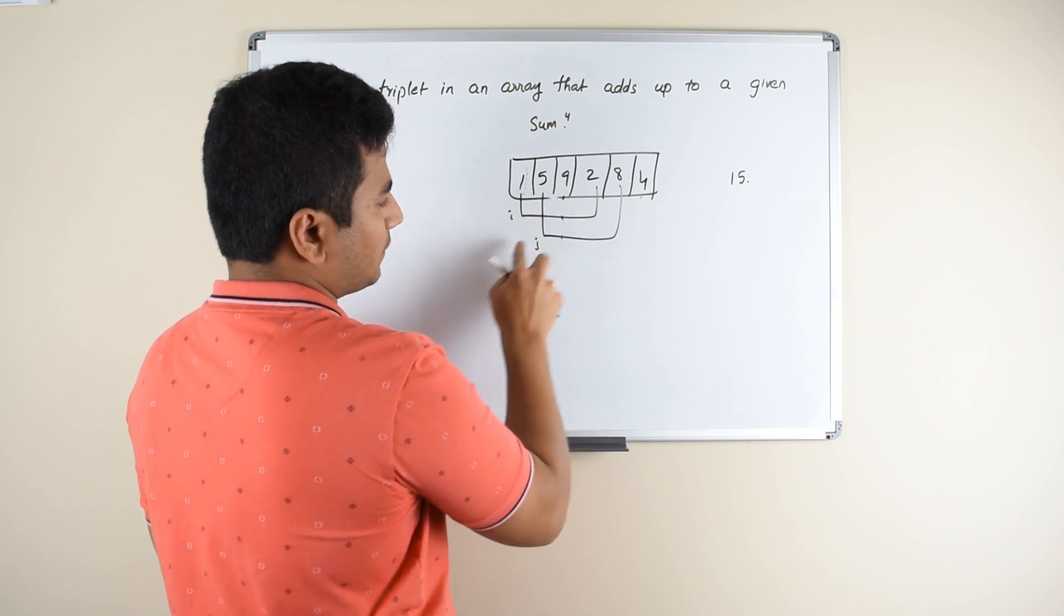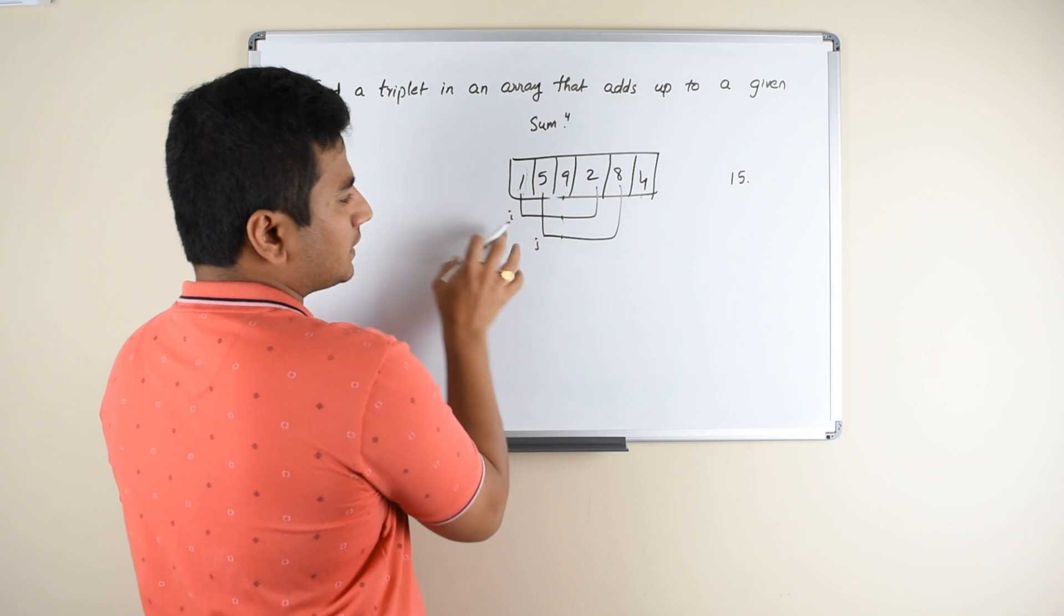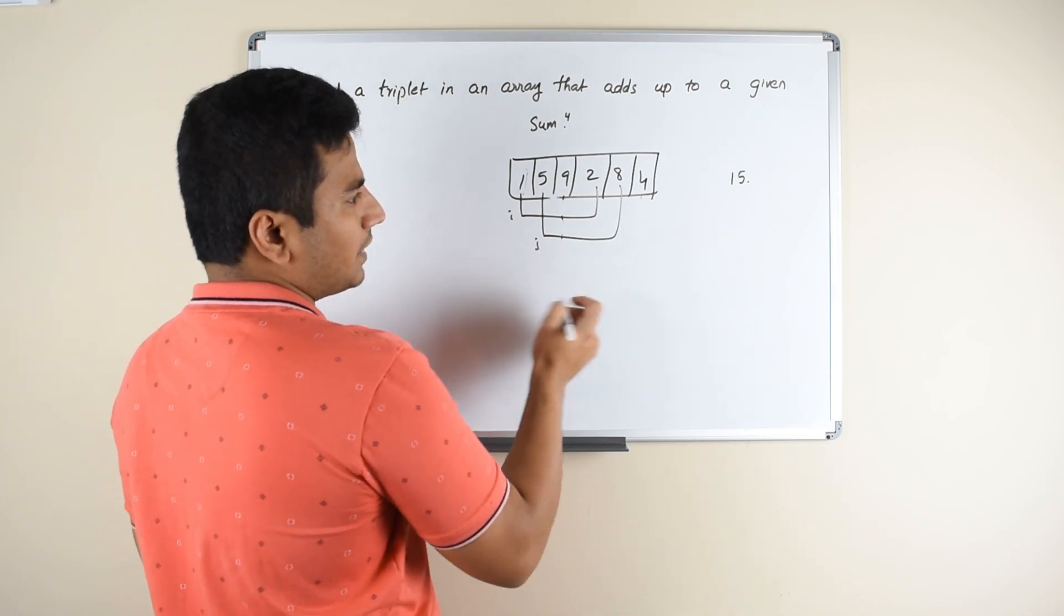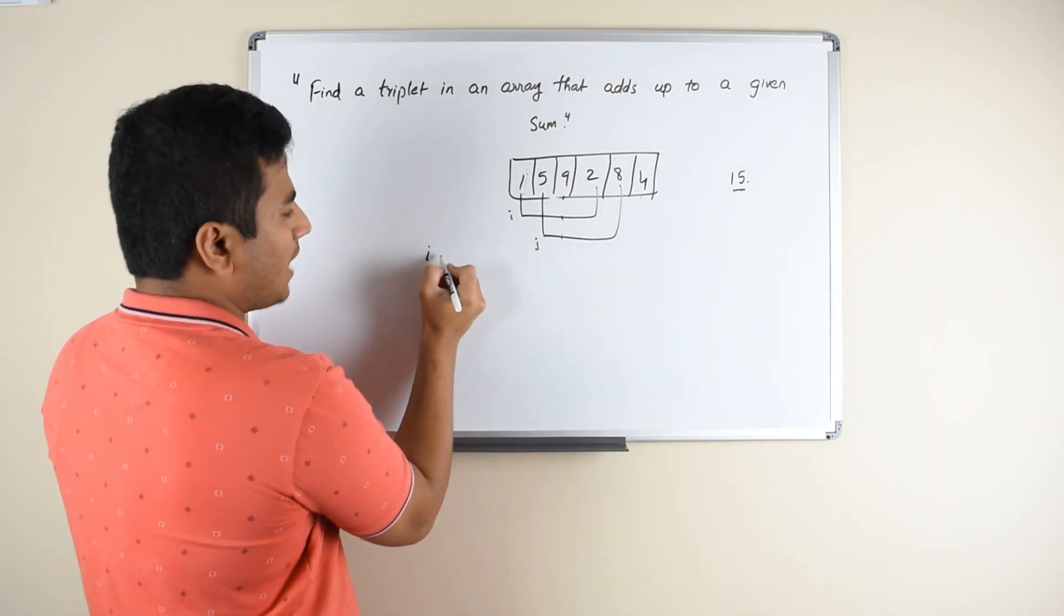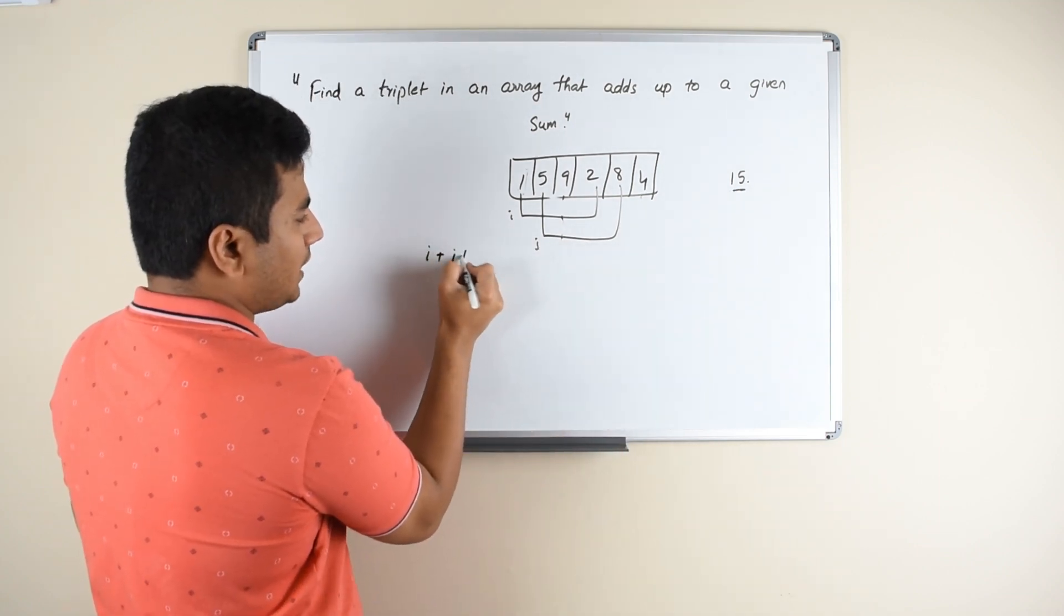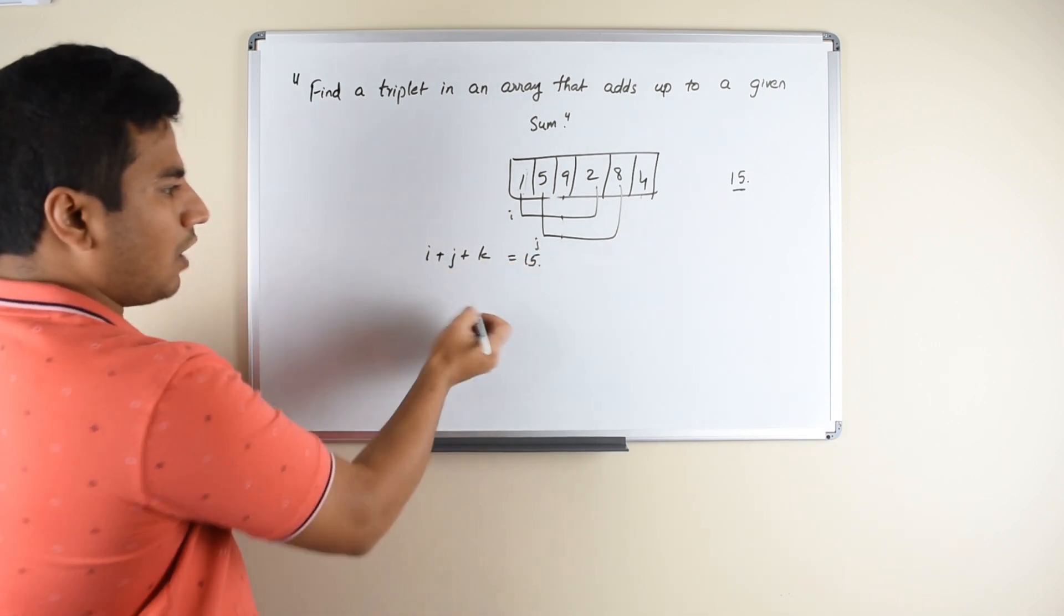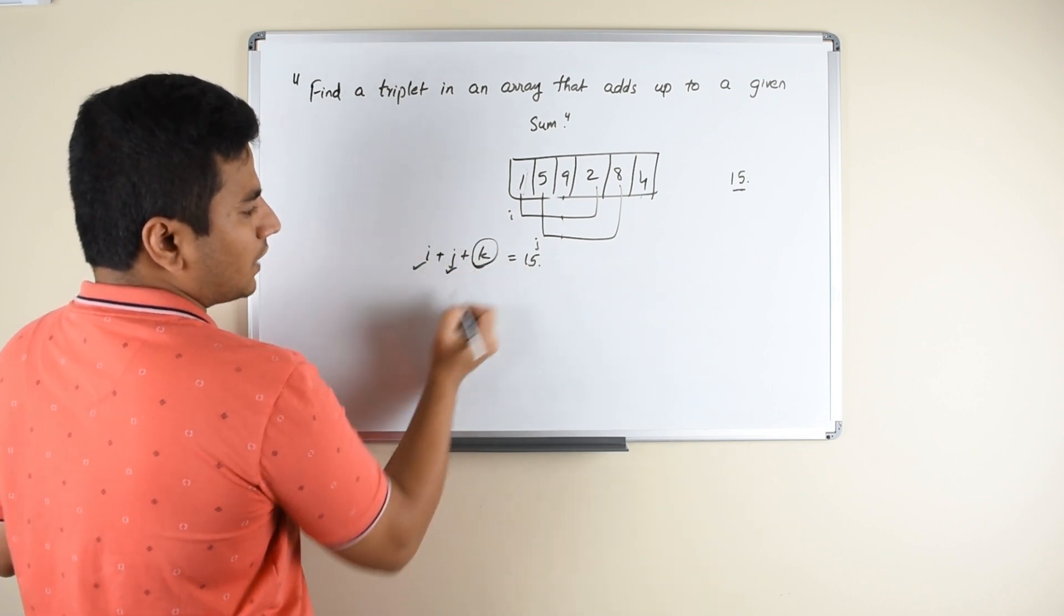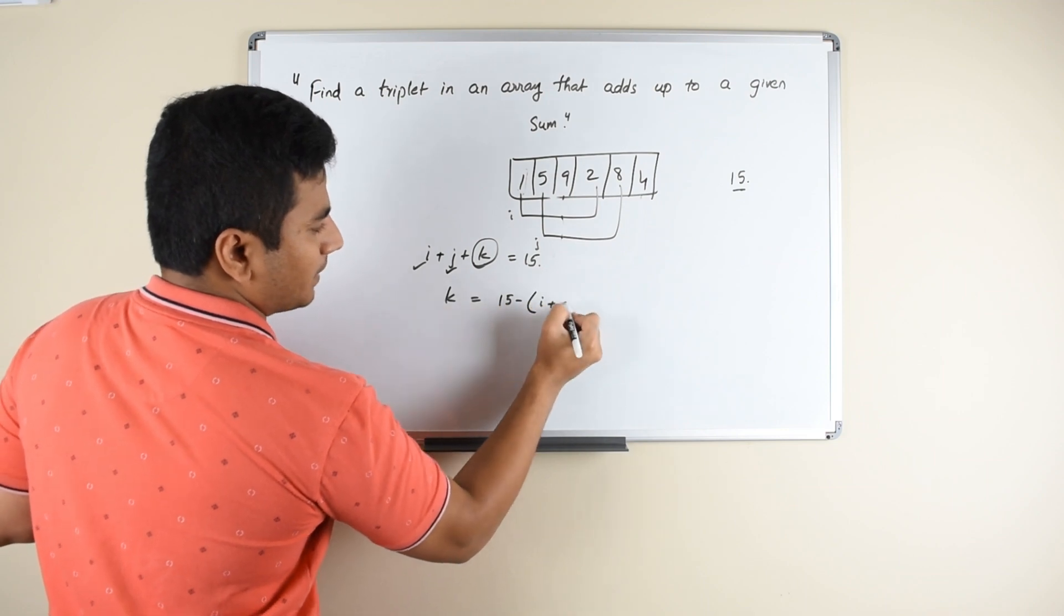So in this video what we are going to do is we want to take off this iteration and keep the rest of the iterations as is. Once you know the two elements of a triplet, you just have to know the third element which adds up to the given sum. So let us say you have three elements I, J, K, they all add up to 15. Out of this, you know I, you know J, and you just have to know K. So K is equal to 15 minus I plus J.